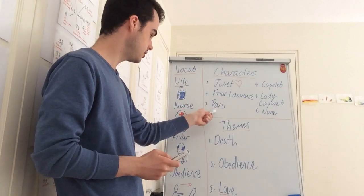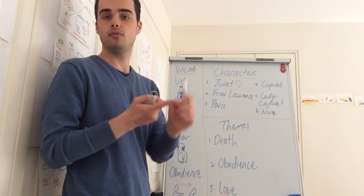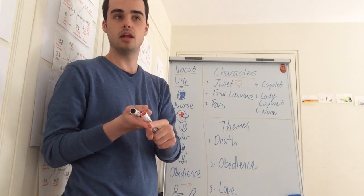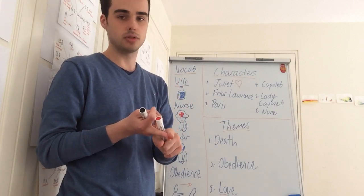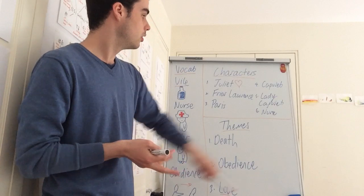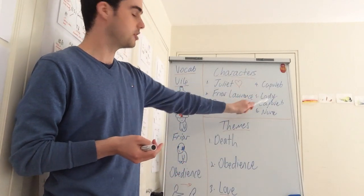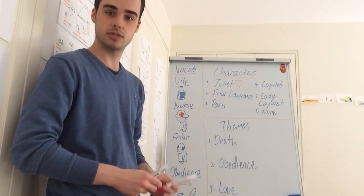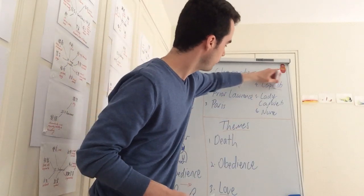Next we have Paris. Paris is in love with Juliet, but Juliet is not in love with Paris. She does not want to marry him, even though her dad, Capulet, and her mum all want her to do so, because they're from the same family.